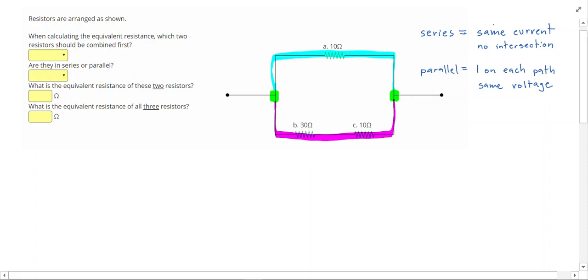You'll notice that B and C are on the same path. There's no intersection between them, so that means B and C must make a series.